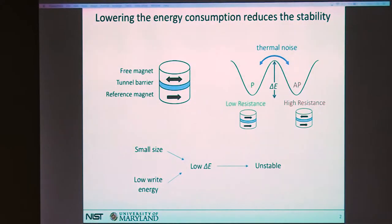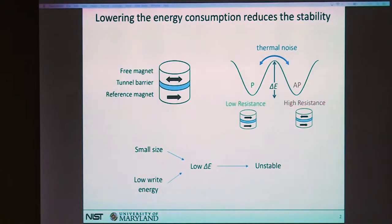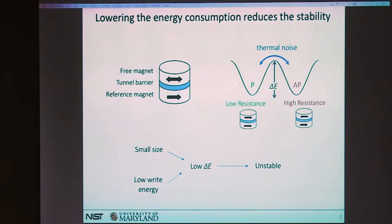We've heard a lot about magnetic tunnel junctions and how they're useful for memory and computing. When we try to use them, we want to reduce the energy barriers between their two states — either to make them small or to reduce the energy required to program them. But as we reduce these energy barriers, the two stable states become not so stable, because thermal noise can induce random switches between the parallel and anti-parallel states.